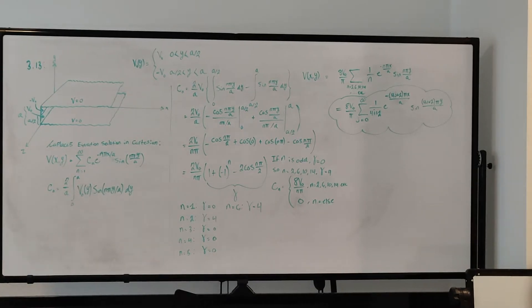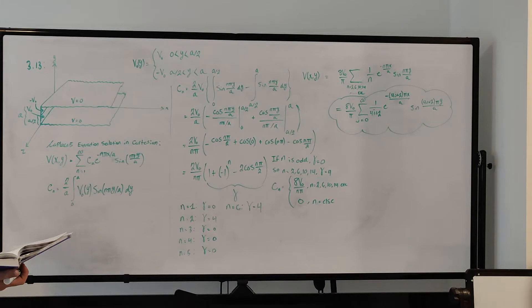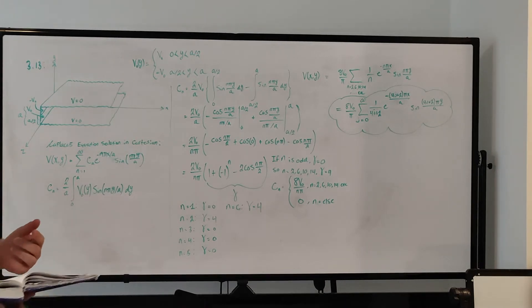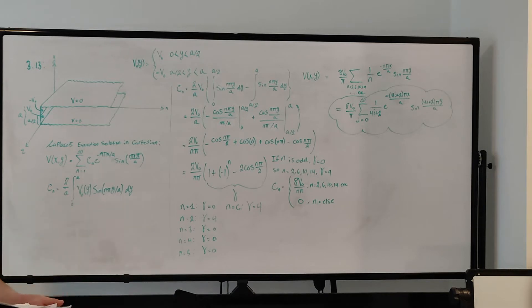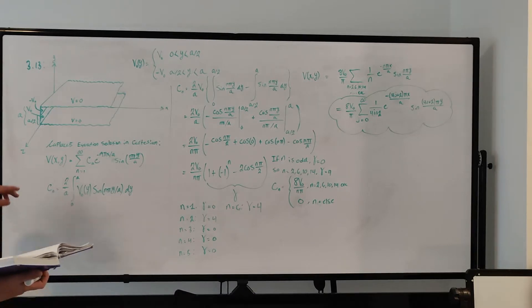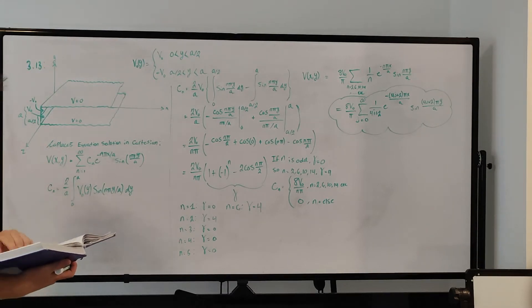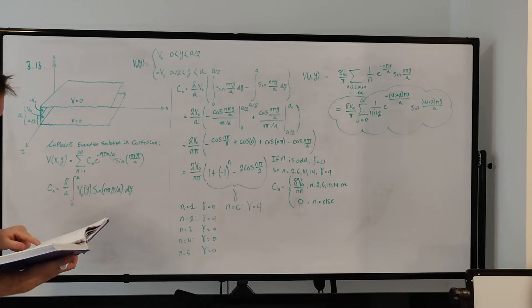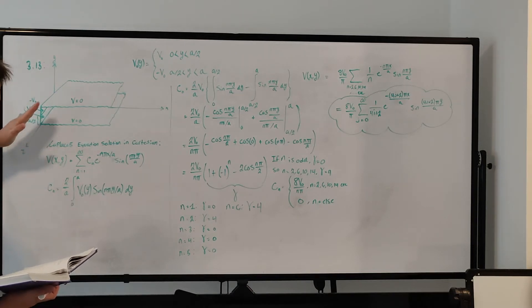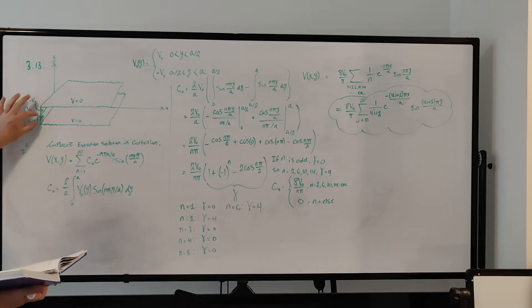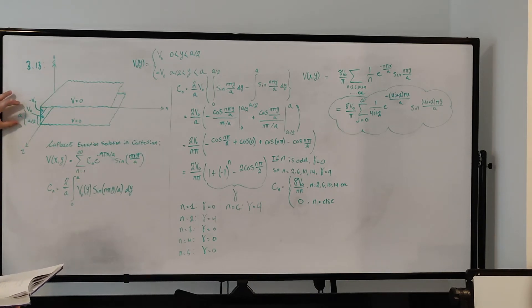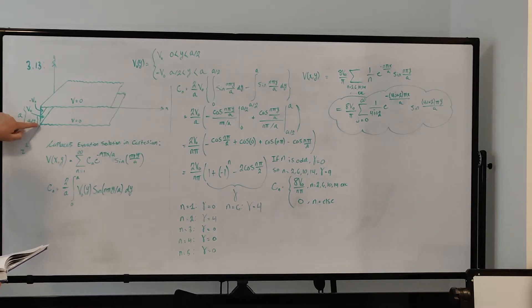So this problem — let me get the problem statement. It says to find the potential in the infinite slot of example 3.3. If you have your textbook, go and look at example 3.3 and read through it if you haven't. It says if the boundary at x equals zero — our axes are x, y is the vertical and z is coming out of the board — consists of two metal strips where the height of the strip is a, so from y equals zero to y equals a.